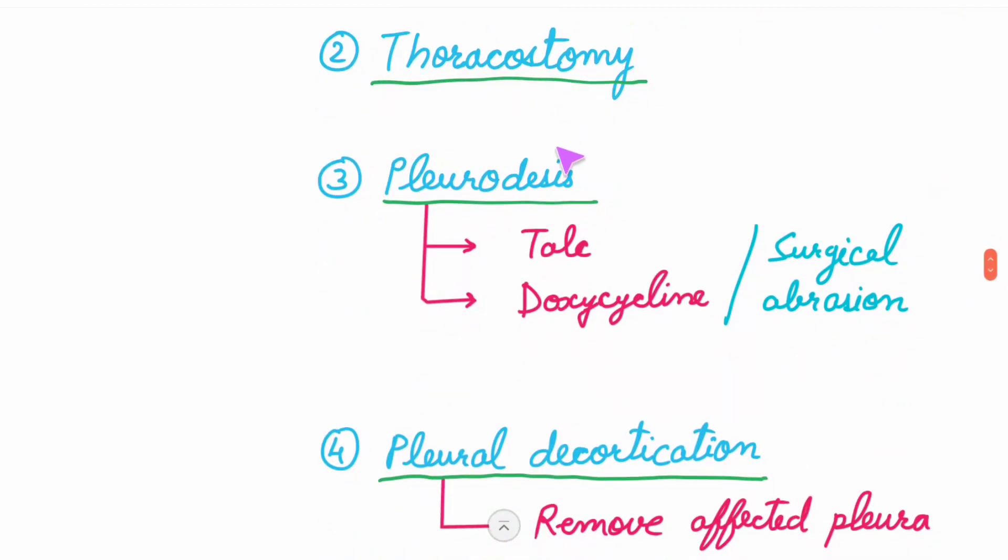Pleurodesis: talcum powder or doxycycline - these are the sclerosing agents to be used. These are poured into your pleural cavity. You can use these sclerosing agents or surgical abrasion can be done.